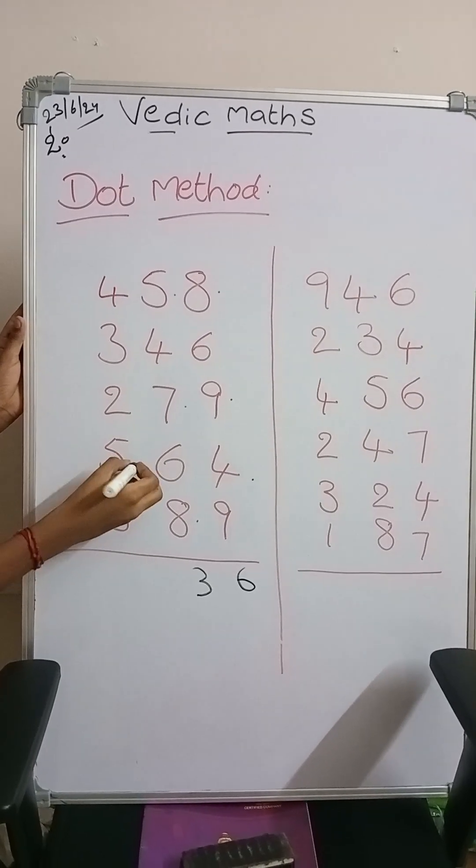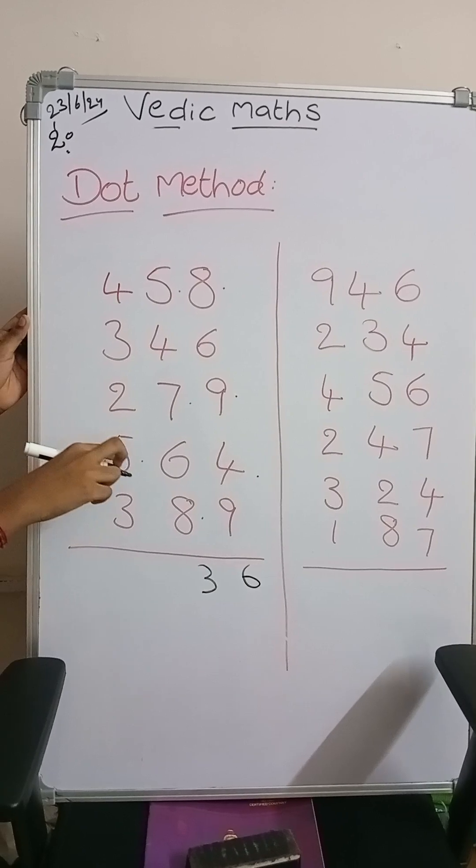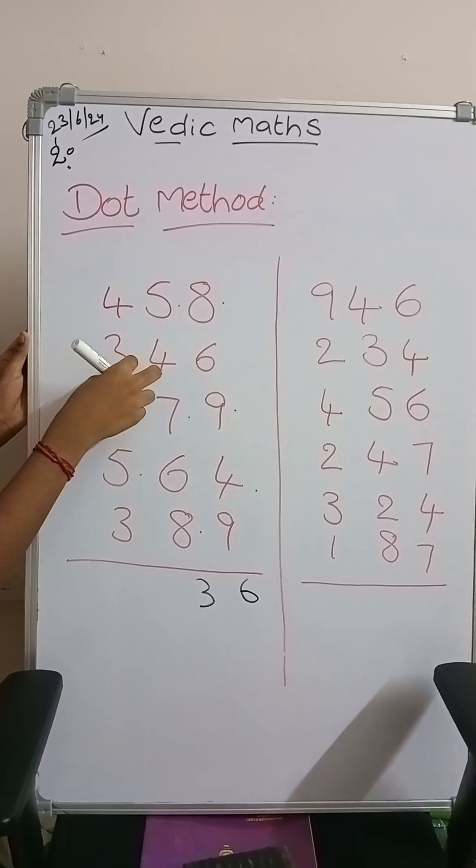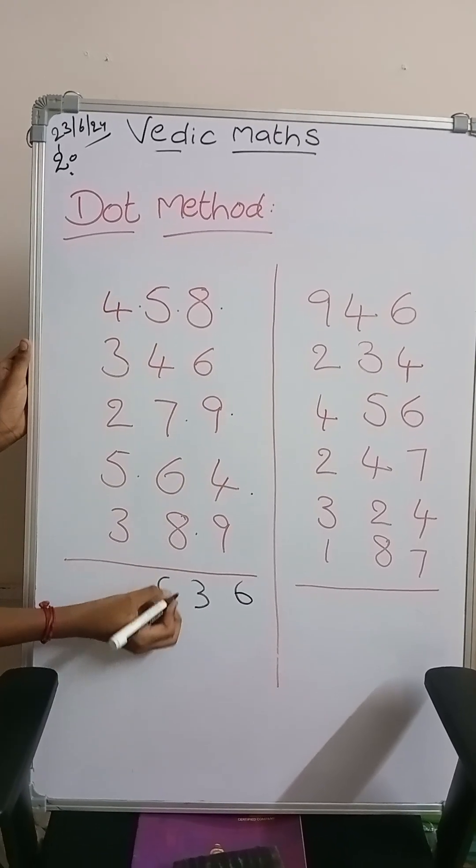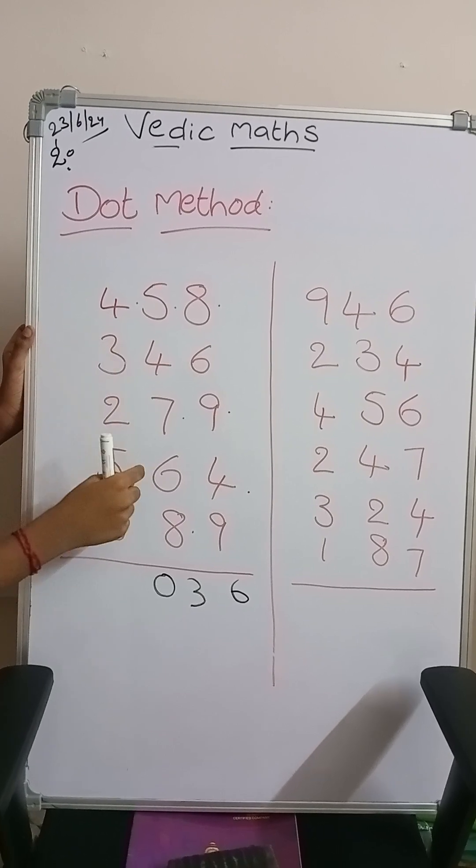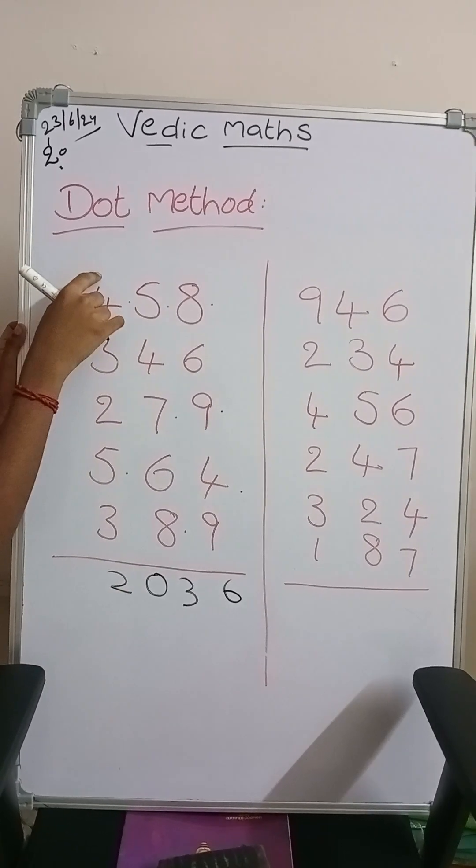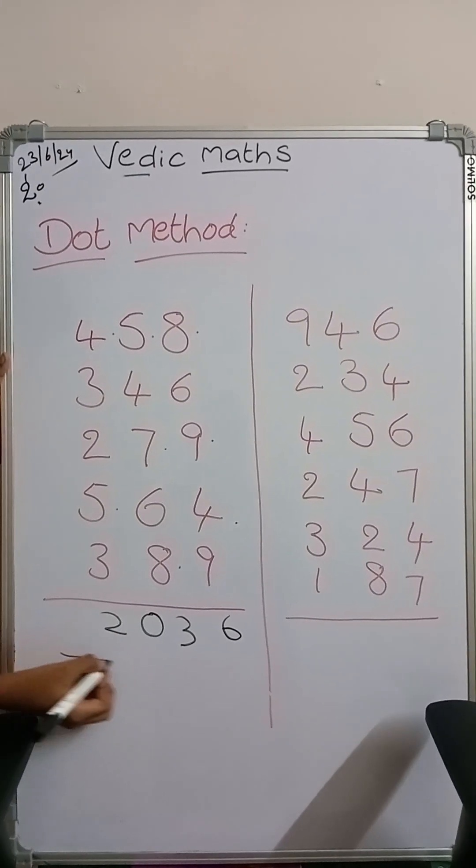So the n number is 3. 3 plus 3 is 6. 6 plus 5 is 11. So we have the n number as 1. So 1 plus 2 is 3. 3 plus 3 is 6. 6 plus 4 is 10. Dot. n number is 0. Now we have to count the dots. We have 2 dots. So write the 2 here because we don't have any digits here. So the answer is 2036.